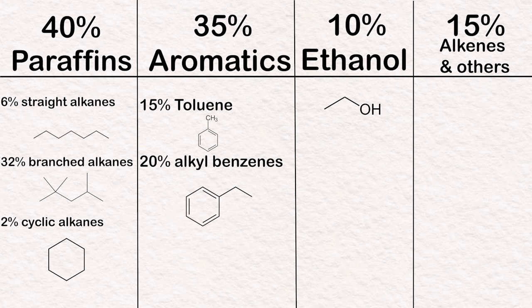Within the 15% of alkenes and others, it is mostly alkenes with the added ethers, and some small impurities like water and sulfur compounds, and some other hydrocarbons which are present in very low concentrations.